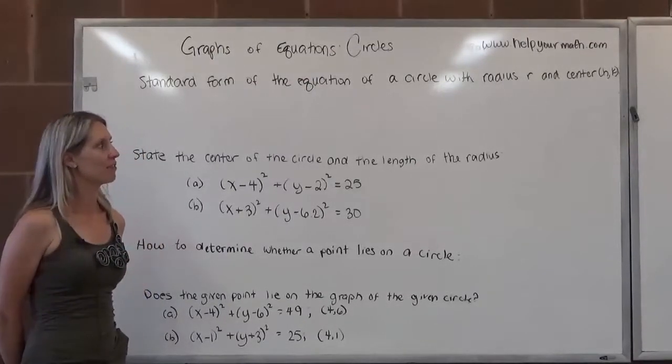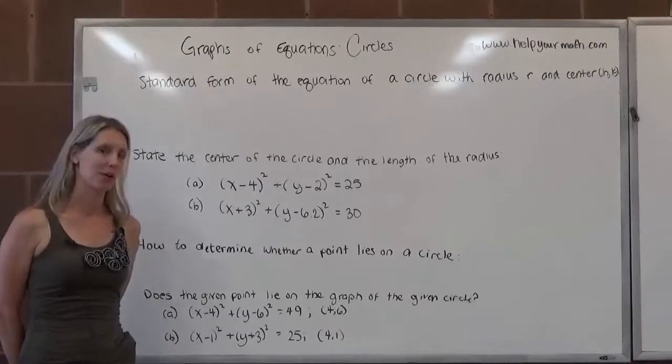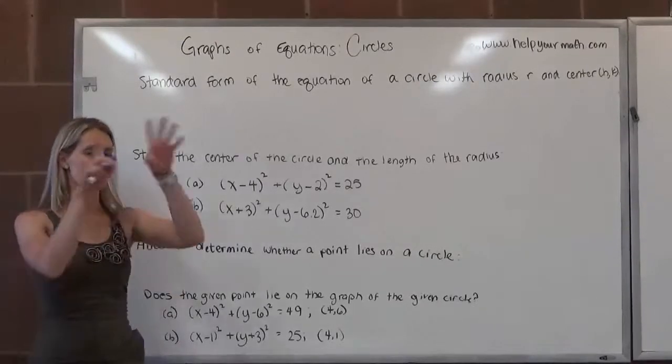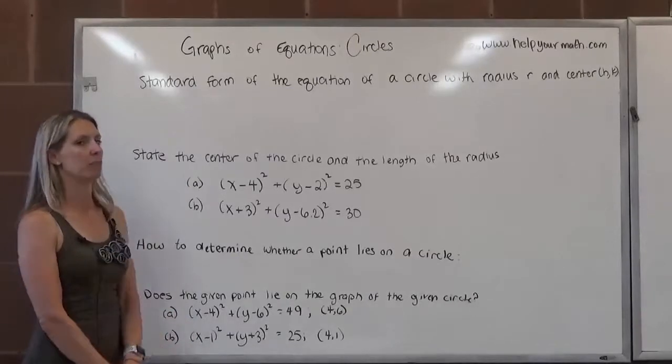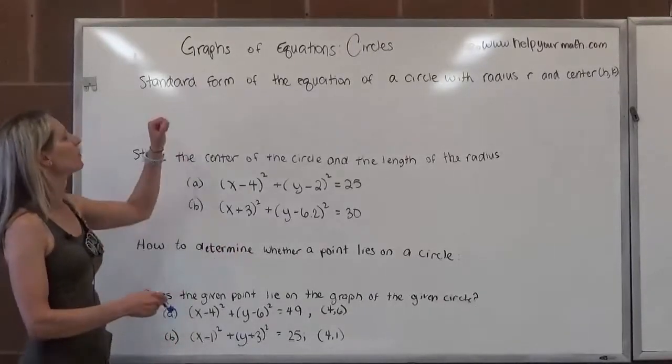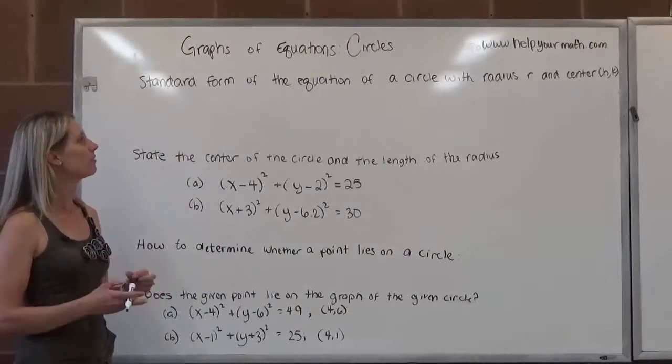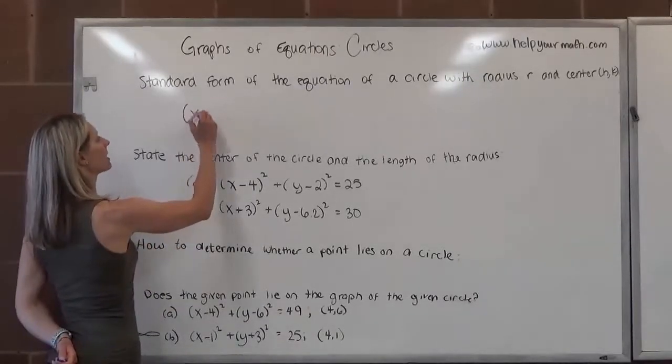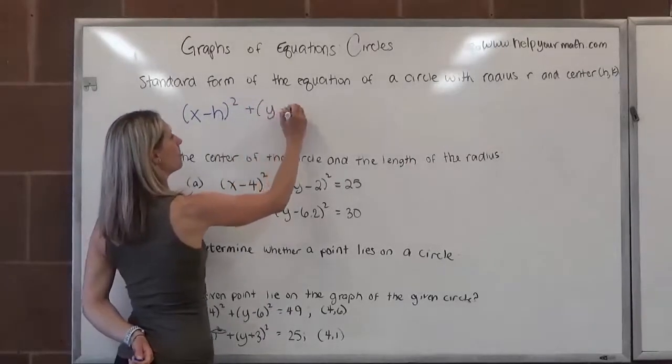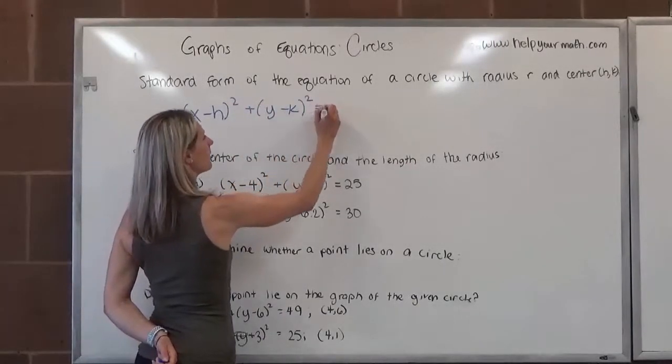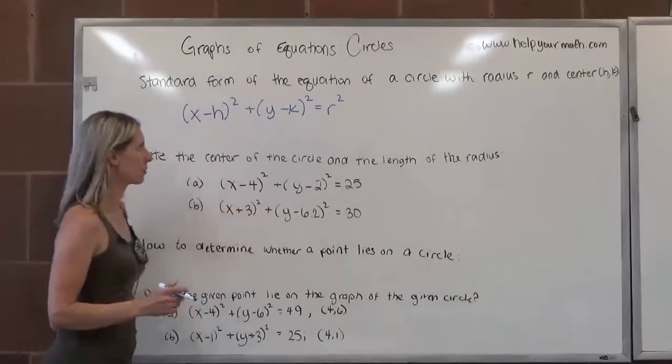Now, oddly enough, the center of the circle is not actually part of the circle, because the circle consists of the points that are all equidistant from the center. So the formula for standard form for the equation of a circle is given by (x - h)² + (y - k)² = r².